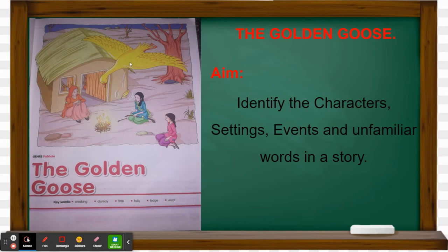On the cover page of The Golden Goose, there is a mud house, an old woman, and her two daughters. These are the characters of the story, and the setting is a village. Now open your content book to page number 10.